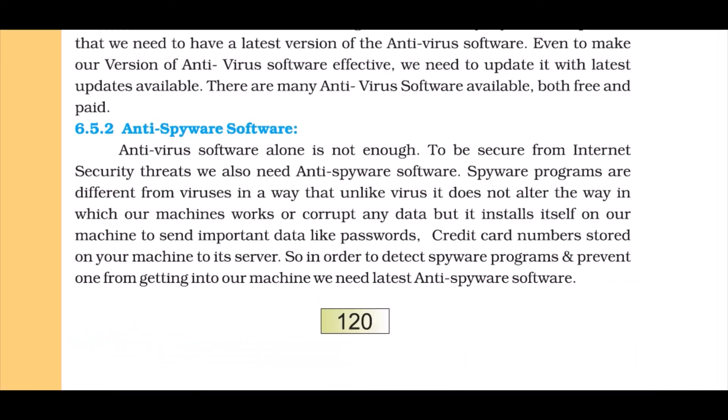Anti-spyware software: Spying means someone is looking at your information without authorization. Anti-virus alone is not enough — we also need anti-spyware software. Spyware is different from viruses in that it does not alter how your machine works or corrupt your data; it simply sends your information — passwords, credit card details — to another computer secretly in the background, without the user feeling any difference. That is why we need anti-spyware software.